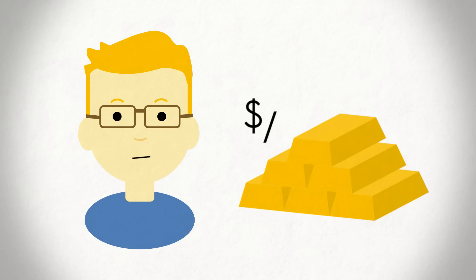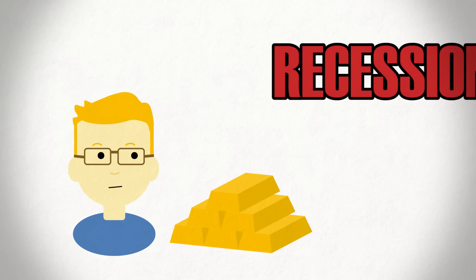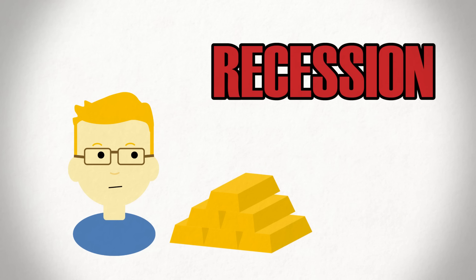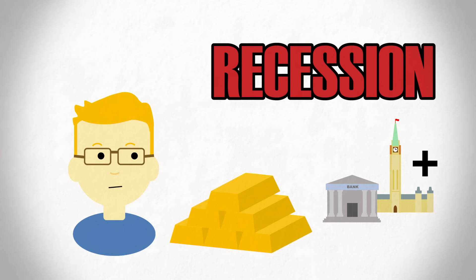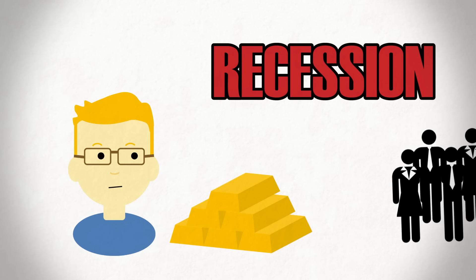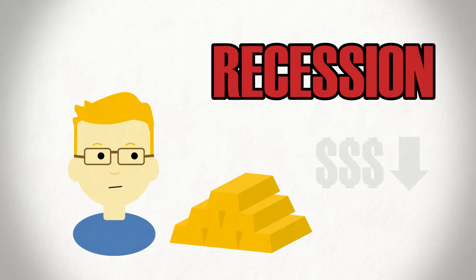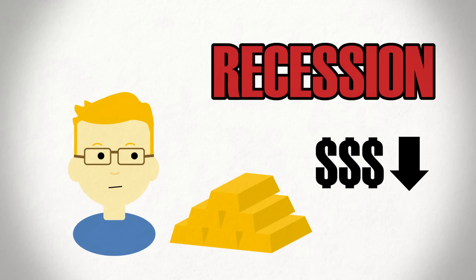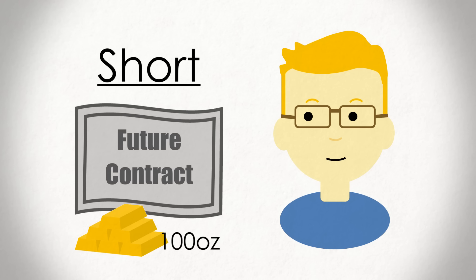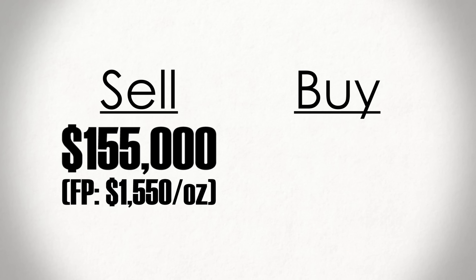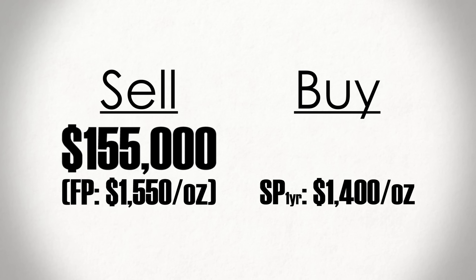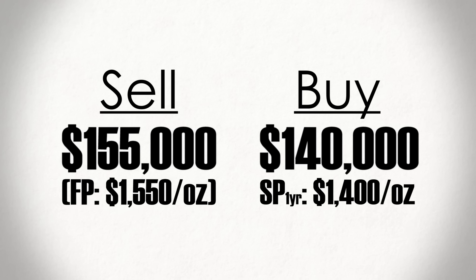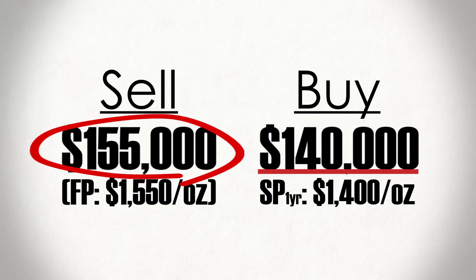But what if instead of expecting gold prices to rise, you actually expect them to fall? With an impending recession, you may assume the government and central bank will stimulate the economy, encouraging investors to leave gold and invest in the stock market, thereby depressing gold prices. Well, by going short and agreeing to sell the gold in a year's time, you invert the return. If the price falls below $1,550, you would be able to buy gold at the lower spot price and sell at the higher forward price to profit.